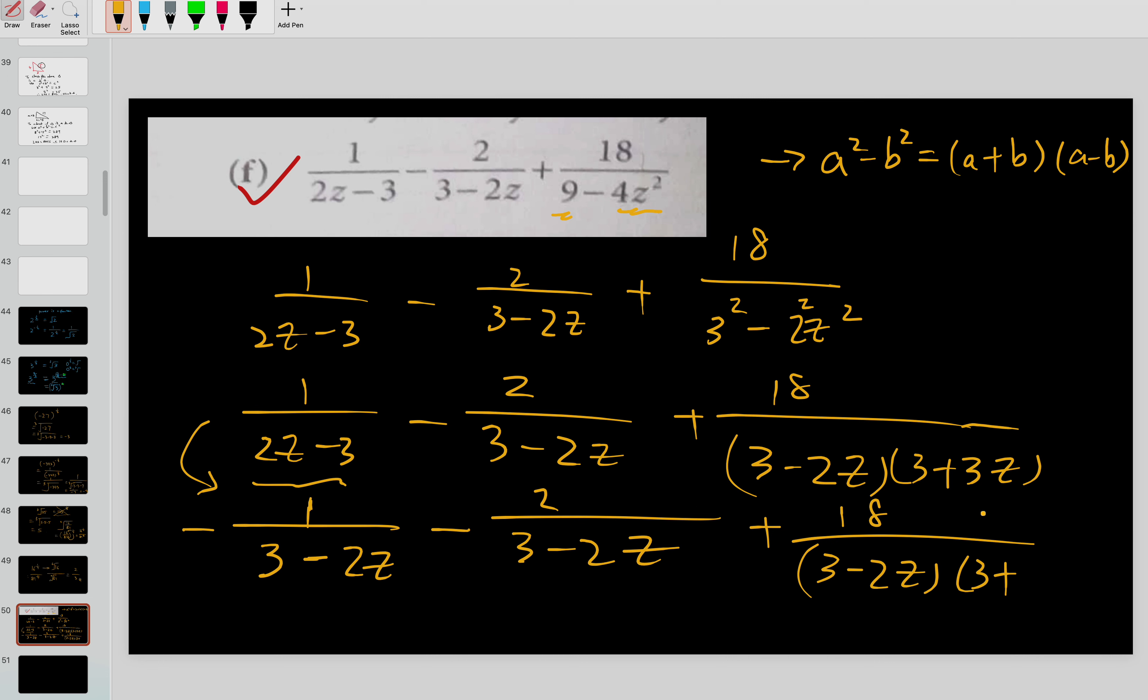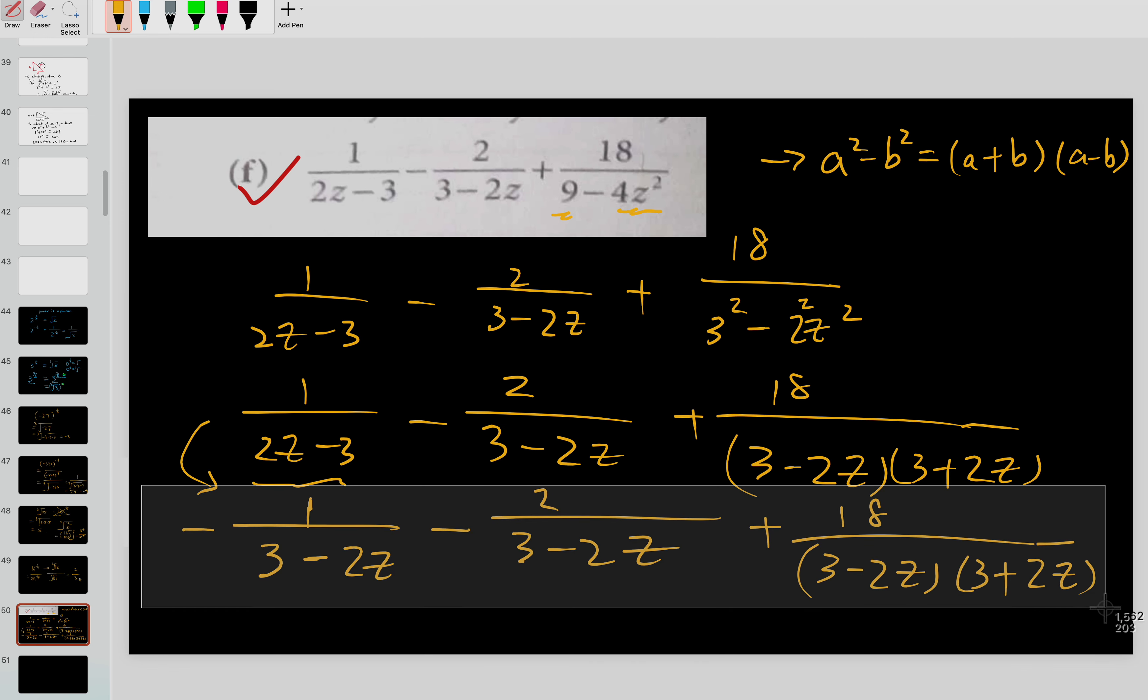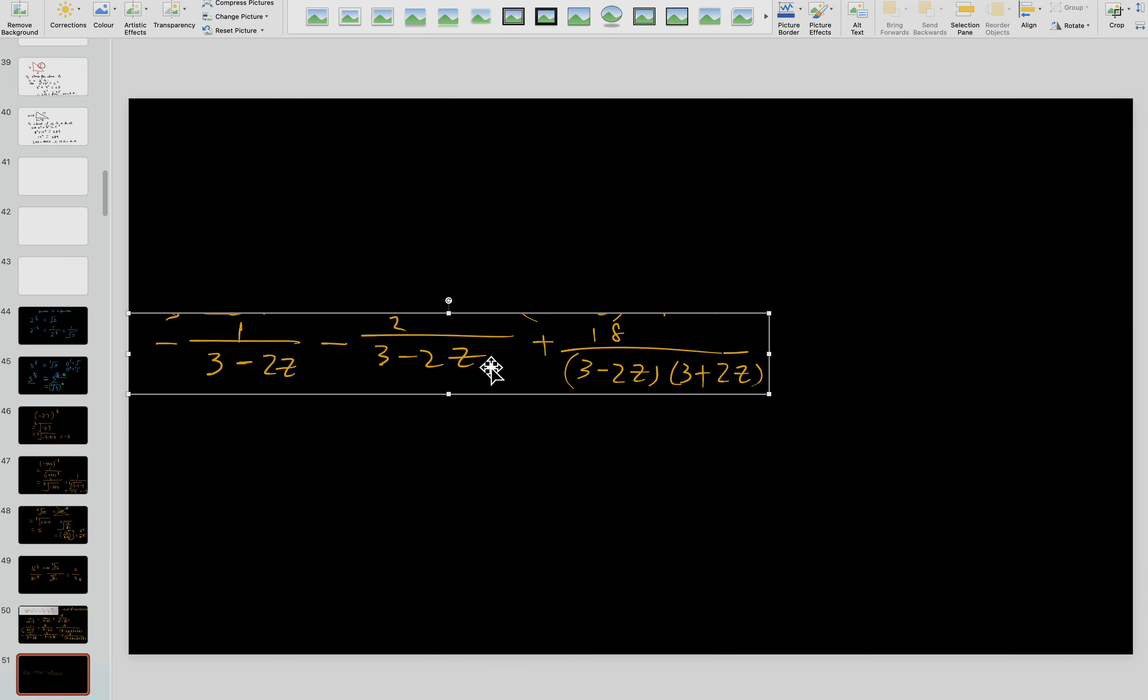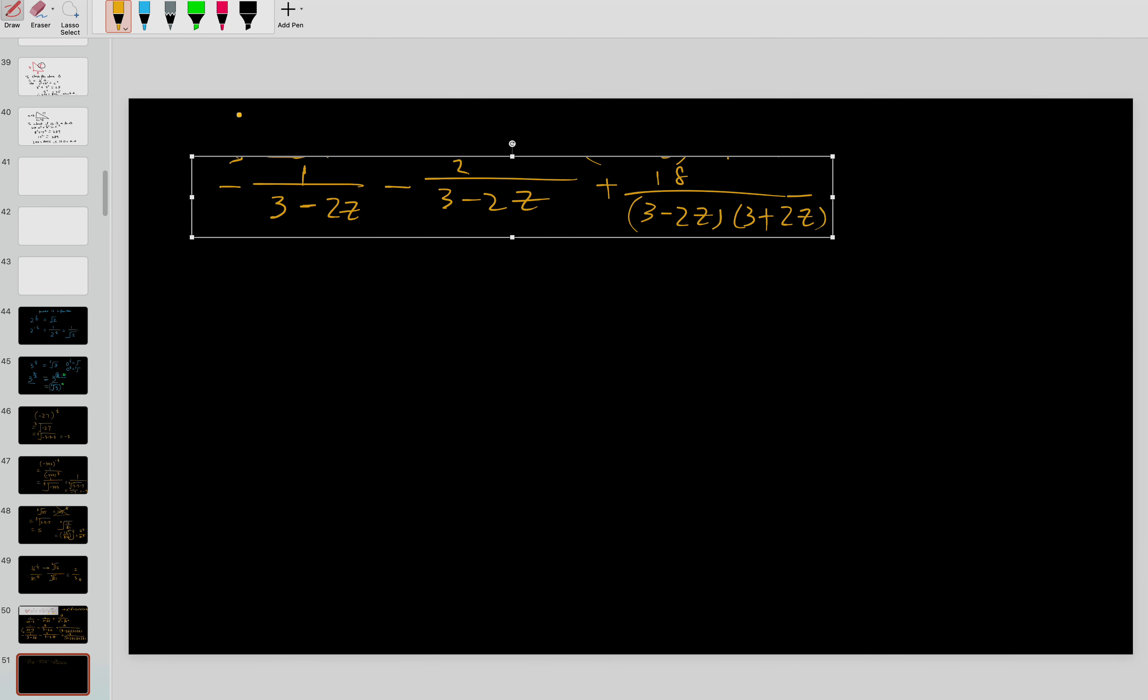Oh I make a mistake here, it should be 2z. You need to be really careful. After that you just continue with the below one. This one compared to this, you cancel 3 plus 2z.